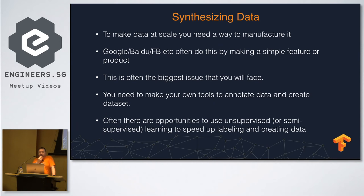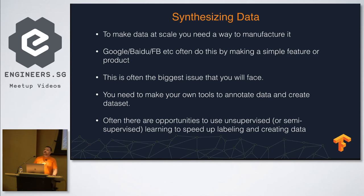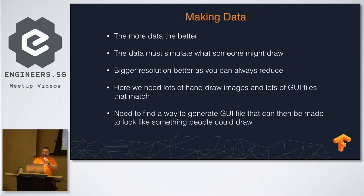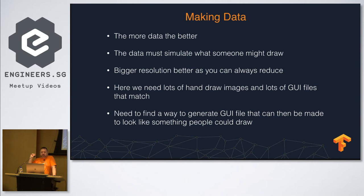You often have to build your own tools to annotate or tag data. You can also use unsupervised or semi-supervised learning to take raw data from the wild and label it. Obviously the more data the better, but the data must simulate real use — in this case, it had to simulate what someone might draw.